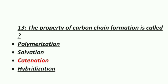Thirteenth MCQ: the property of a carbon chain formation is called — Option 1: Polymerization, Option 2: Solvation, Option 3: Catenation, Option 4: Hybridization. The correct answer is catenation.